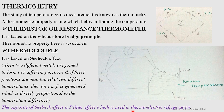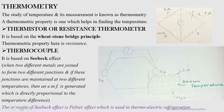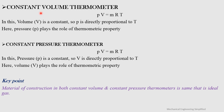The opposite of the Seebeck effect is the Peltier effect, which is used in thermoelectric refrigeration. In that arrangement, two metals are joined to form two different junctions, but instead of measuring EMF, we apply an electromotive force. As a result, the two junctions reach two different temperatures — one hotter and one relatively colder — enabling thermoelectric refrigeration.